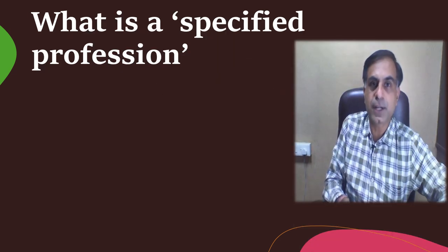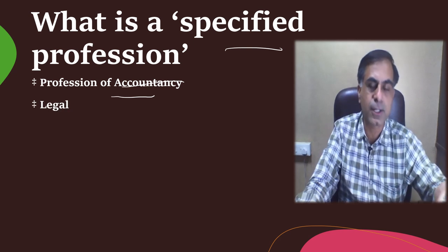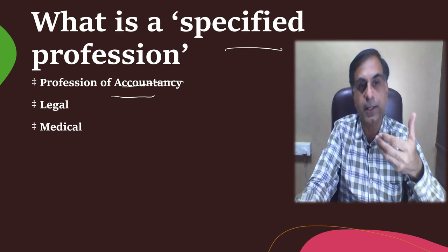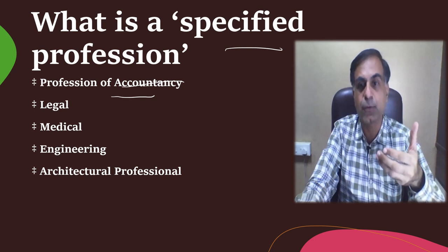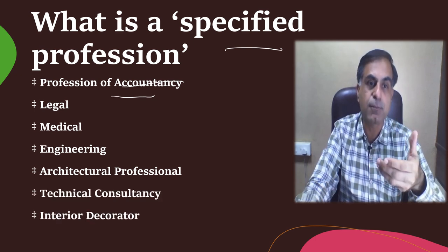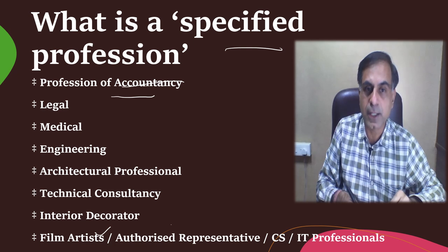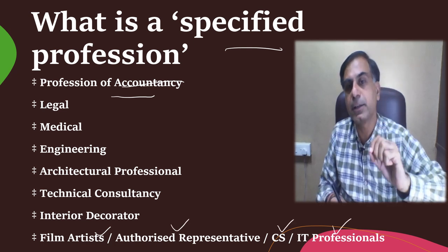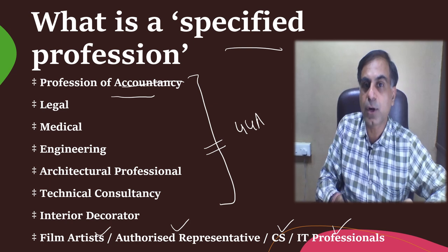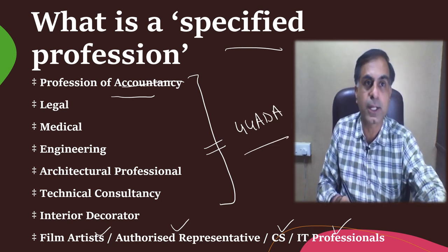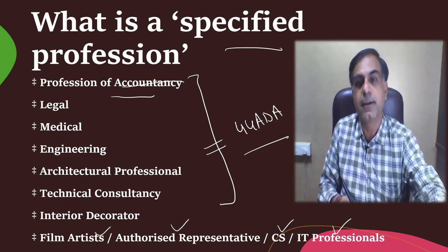What is a specified professional? Specified professionals include: the profession of accountancy like chartered accountants; legal profession like advocates; medical profession like doctors; engineering — yes, engineers are also specified professionals; architectural profession; technical consultancy related persons; interior decorators; and certain persons specifically notified like film artists, authorized representatives, company secretaries, and IT professionals. If you are not a specified professional in these categories, you are not entitled to avail the benefit of Section 44 ADA.